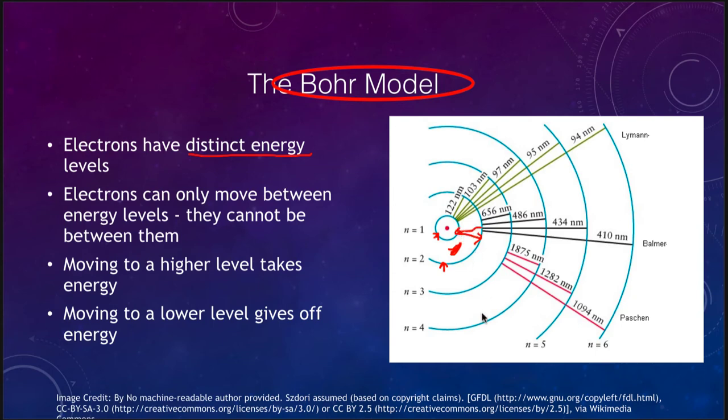So all the electron can do is jump from one energy level to the next or jump back down. When that happens, it takes or gives off energy. When you move the electron from a lower state to a higher state, that takes energy to do it. When you move energy from a higher state to a lower state, that gives off energy.